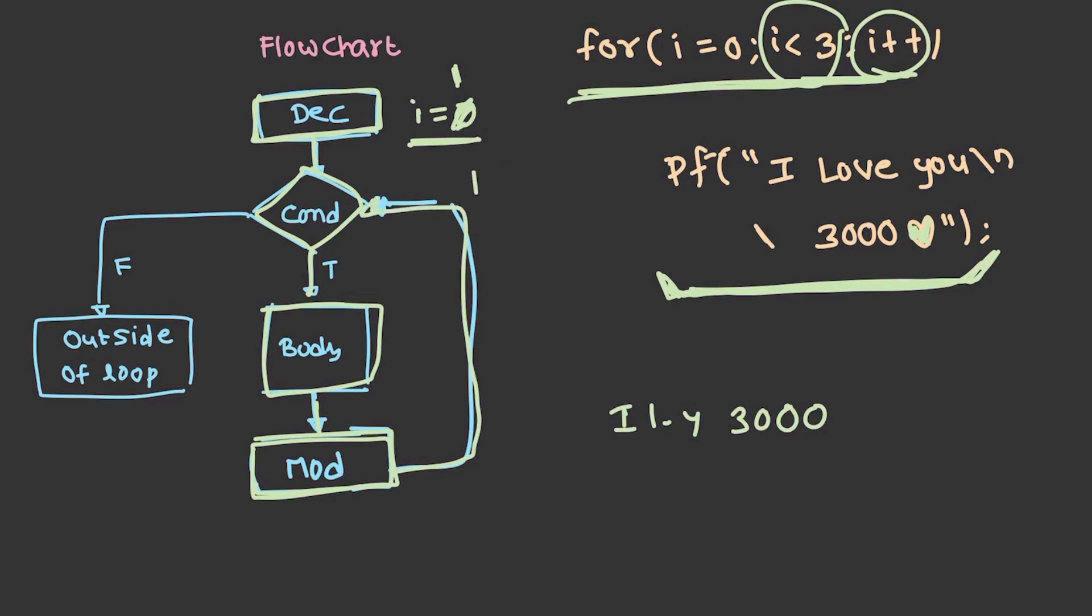The i value is now changed to 1 and the control has been shifted to condition. 1 is still less than 3, so again the body will be executed and one more time it will be printed. After this, the modification has to be repeated and the i value will be changed to 2 and the condition has to be checked again.